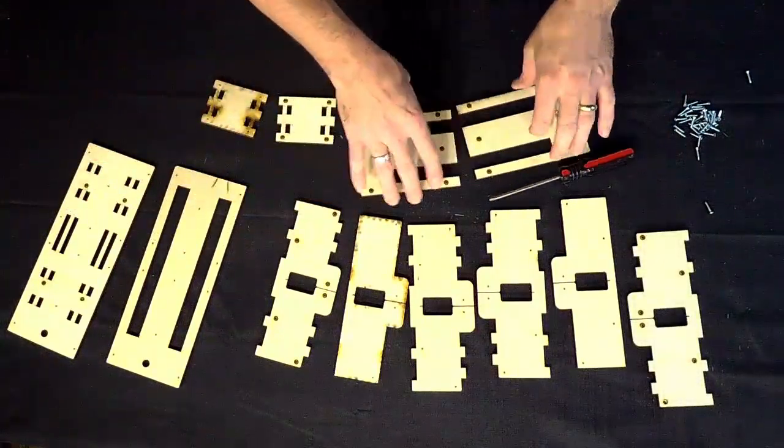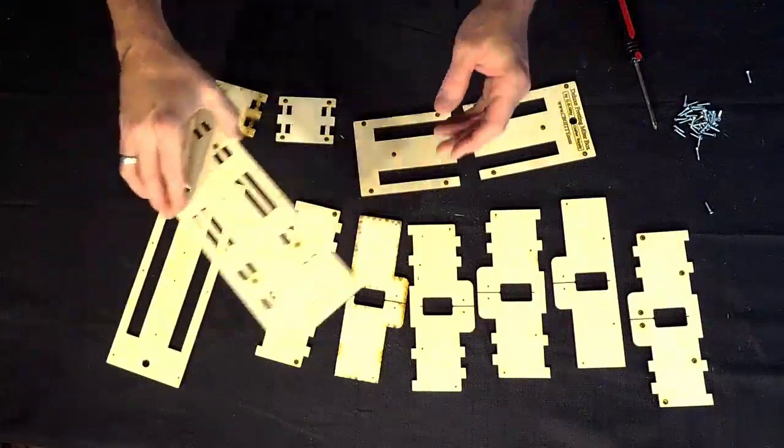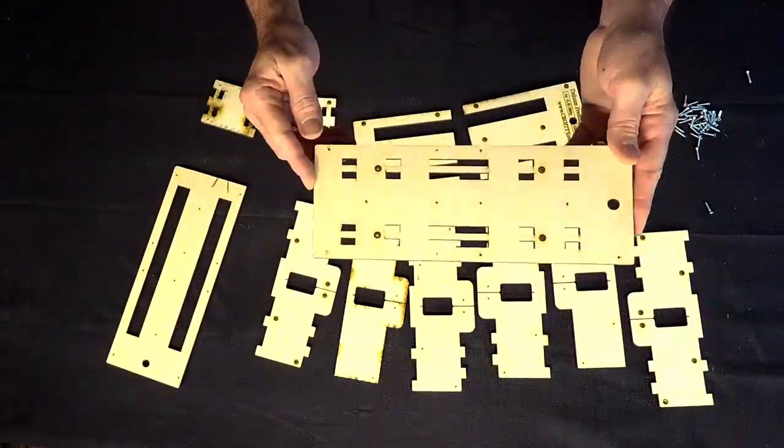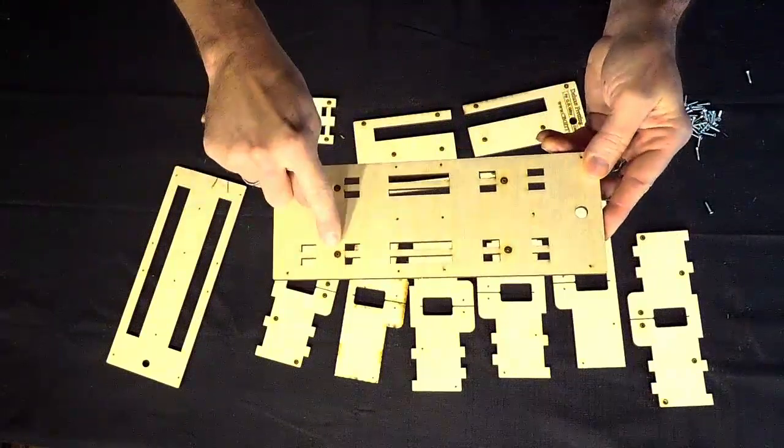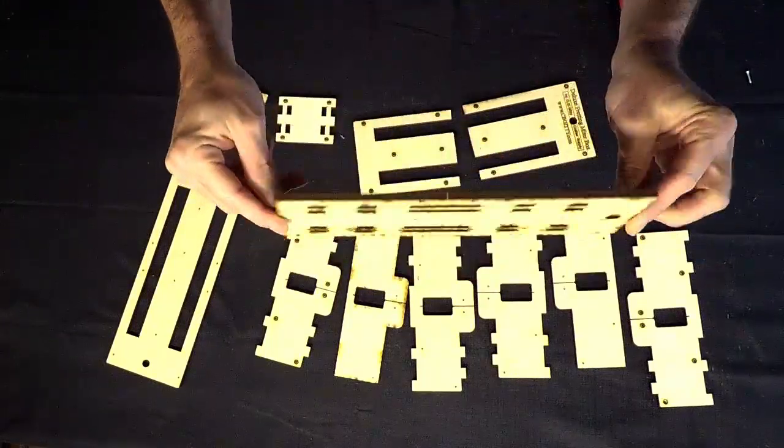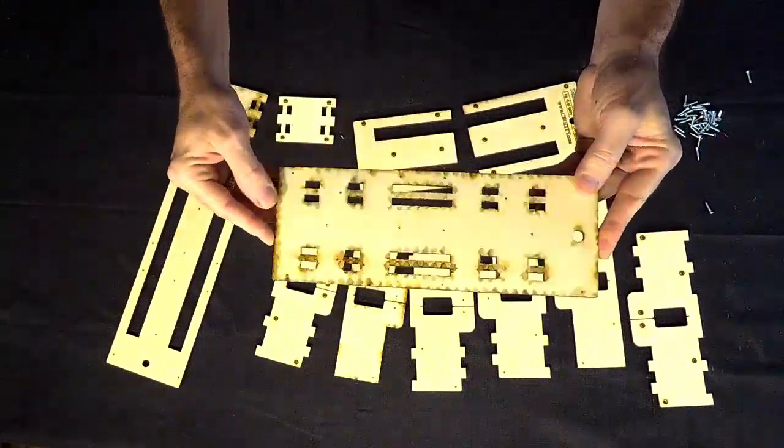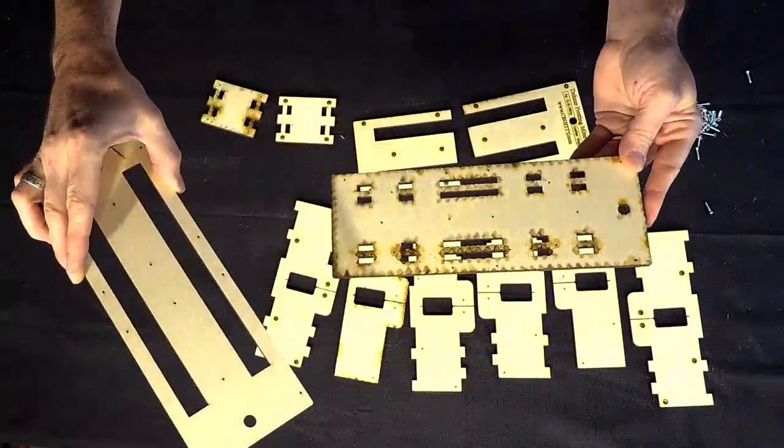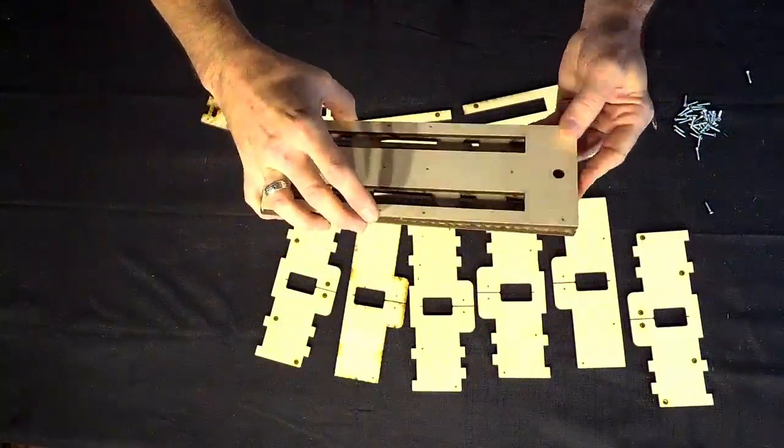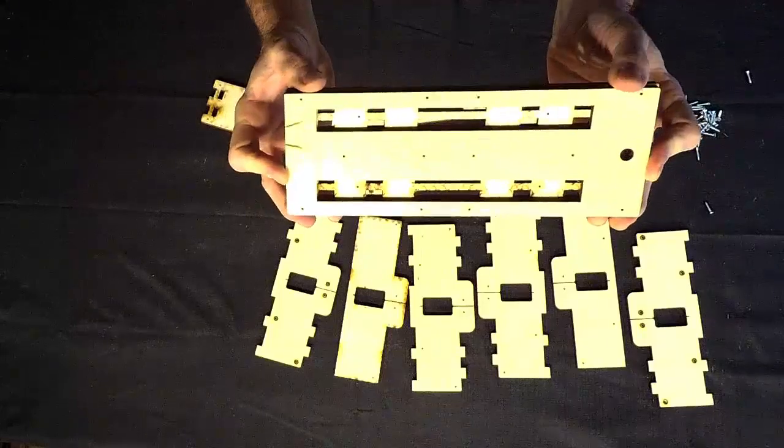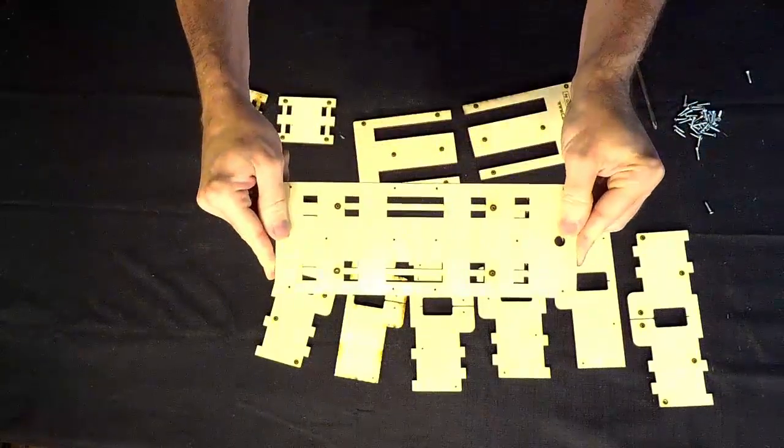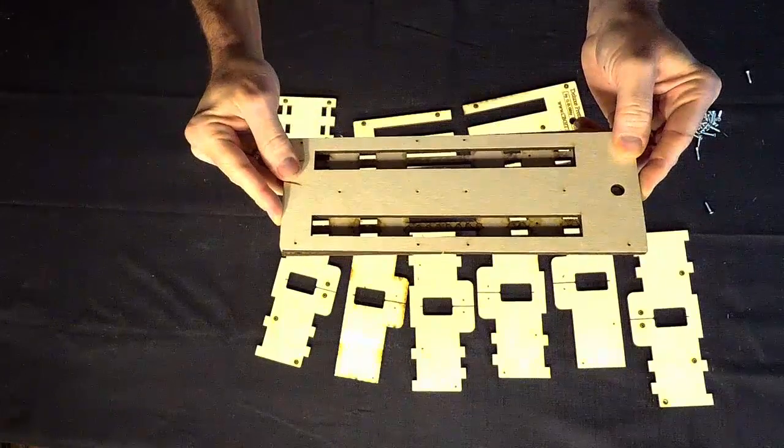To start assembling your kit, take the bottom base piece that looks like this, with the countersinking rings facing downward, and then take the middle piece of the base and place it over. Remember that the countersinking ring should be on the bottom base plate facing downwards.